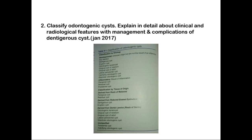Under inflammatory cysts, you have the periapical cyst and the residual cyst. Based on tissue of origin, those derived from the rests of Malassez include the periapical cyst and residual cyst. From the reduced enamel epithelium come the dentigerous cyst and eruption cyst. From the dental lamina or cell rests of Serres come the odontogenic keratocyst, gingival cyst of the newborn, adult lateral periodontal cyst, and glandular odontogenic cyst. Unclassified are the periapical cyst and calcifying odontogenic cyst.